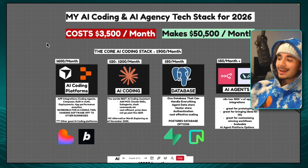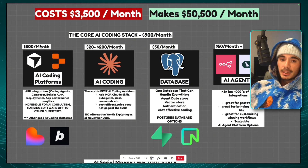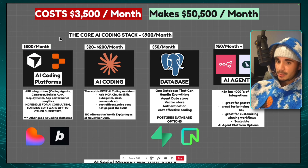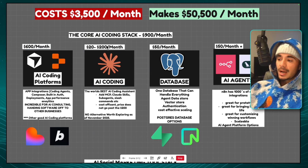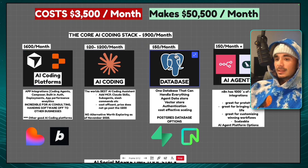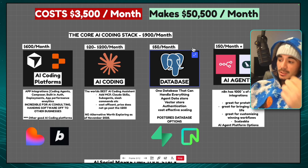When you're first starting out, your coding platform won't be anywhere near $600 — it'll be something like $20 a month. Same thing with Claude Code: you don't have to pay for the $200-a-month plan, you can pay for the $20-a-month plan. And if you're using Replit, the database is already built in, so that's $0. Your costs when starting out are quite low.